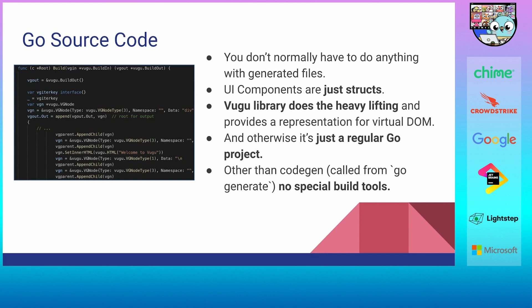The Go source code produced by vugu-gen from your .vugu file normally doesn't need any additional handling — it just gets compiled by the Go compiler and ends up in the WebAssembly executable. The VUGU library does the heavy lifting of synchronizing the output of your build method with the actual browser DOM. Your components are just Go structs, and it builds like a regular Go project. When building the UI producing the WebAssembly output, you set it up so that refreshing the page runs code generation automatically.